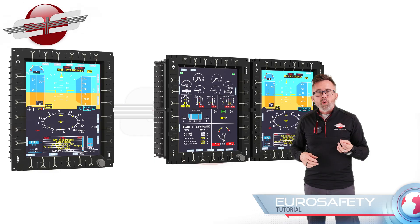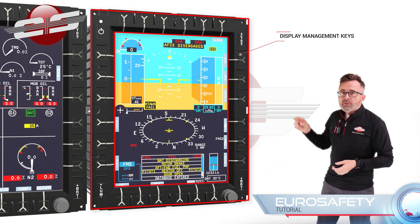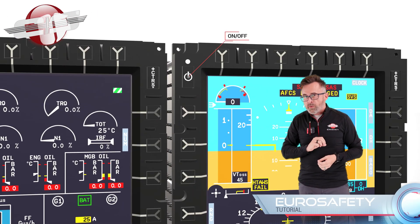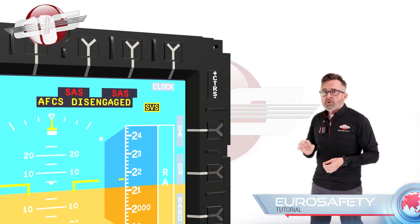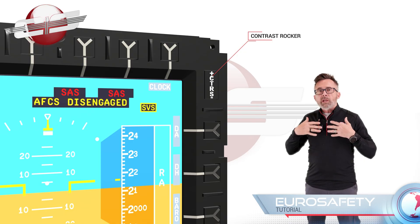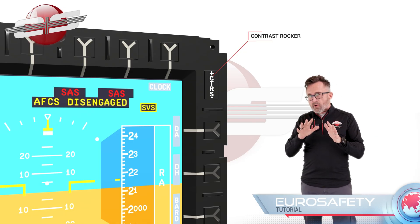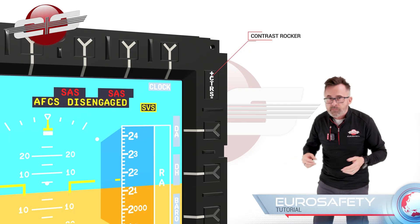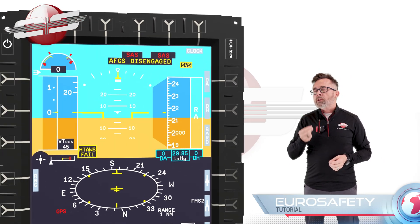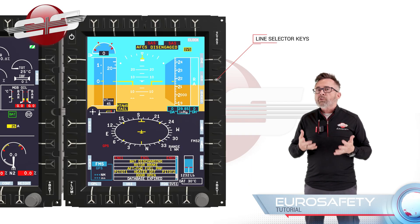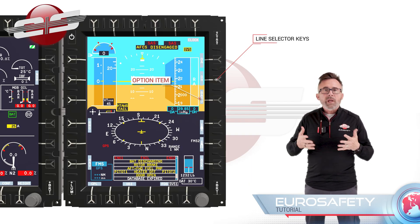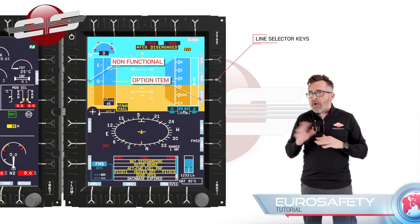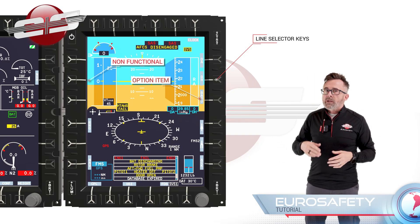Each MFD can be controlled by using the display management keys around the outside of the displays. There is an on/off button in the upper left-hand corner. In the upper right-hand corner there is a contrast control. The contrast rocker adjusts the difference between the background imagery and the overlay symbology, making the flight data more or less prominent. The buttons with arrows on them are called line selector keys. The line selector keys let you choose or change the option shown next to each button on the display screens. If there's no label on the screen by the button, that button at that time is non-functional.